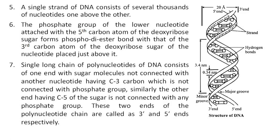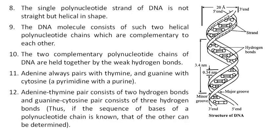A single long chain of polynucleotides of DNA consists of one end with sugar molecules not connected with another nucleotide, having C3 carbon which is not connected with a phosphate group. Similarly, the other end having C5 of the sugar is not connected with any phosphate group. These two ends of the polynucleotide chain are called the three and five ends respectively. The single polynucleotide strand of DNA is not straight but helical in shape. The DNA molecule consists of two such helical polynucleotide chains which are complementary to each other.